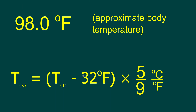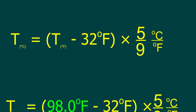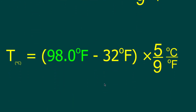Let's take a look at a second example. In this case, we want to convert 98.0 degrees Fahrenheit into Celsius — that's approximately body temperature. Here's our equation a second time. We're going to be putting in our 98.0 degrees Fahrenheit, then we'll start doing our calculation. So, 98.0 degrees Fahrenheit subtract 32 degrees Fahrenheit — we'll do what's inside the bracket first.